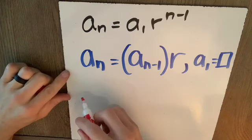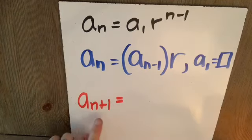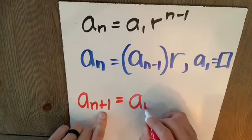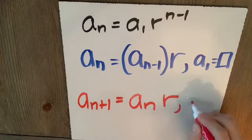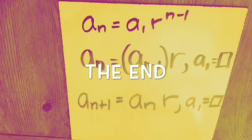Another way to look at this same idea is we could say the next term aN plus 1, so the next term is equal to the current term aN times the common ratio r, provided a1 is given as some number, which I'm representing as a box there. Either way are good descriptions of a recursive formula.